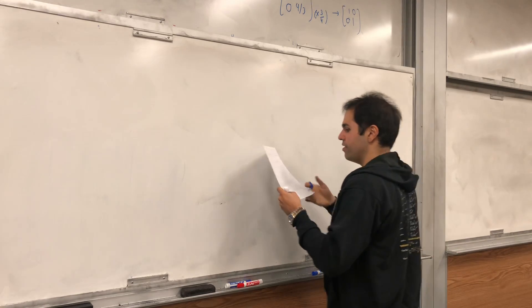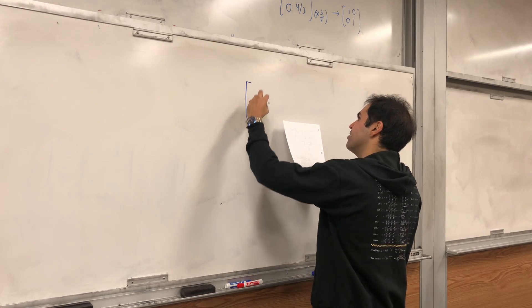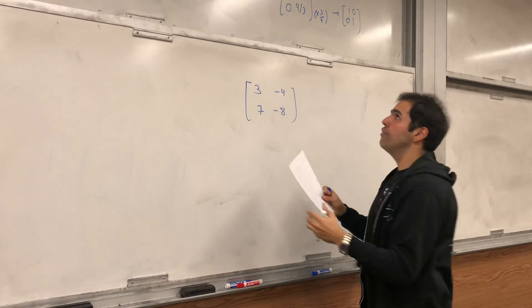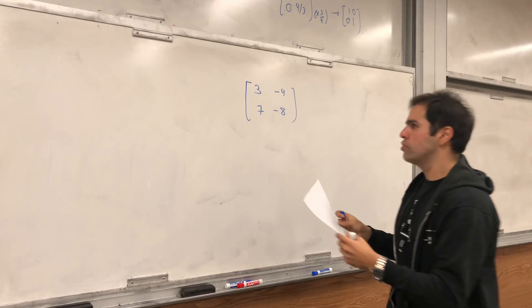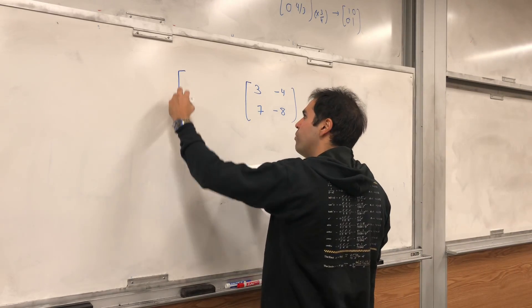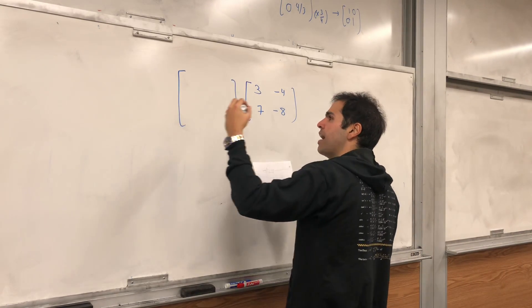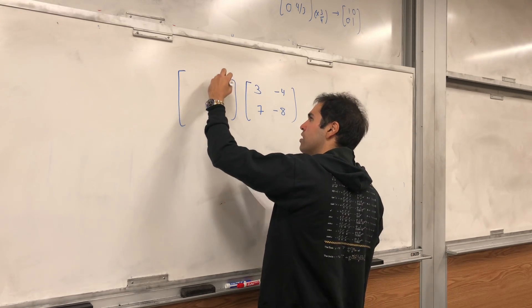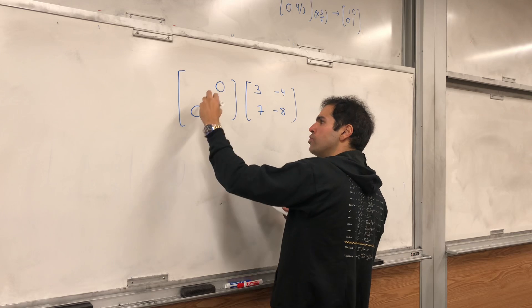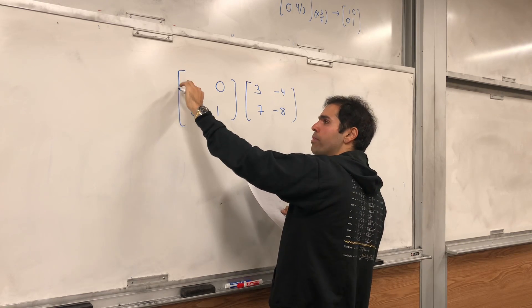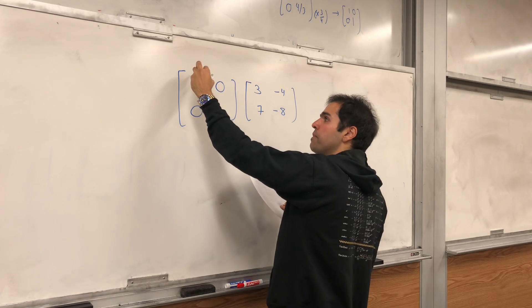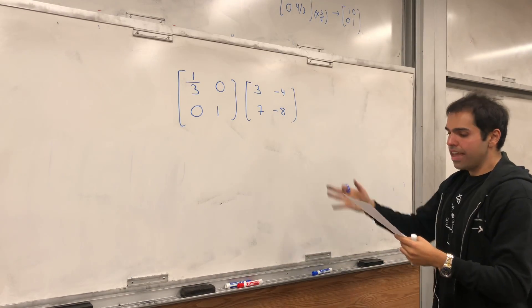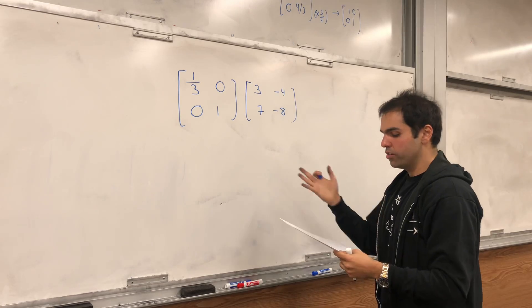So, 3, minus 4, 7, minus 8. The first thing was to multiply the first row by 1 third. We can write this in terms of the elementary matrix, which multiplies the first row by 1 third. It's just 0, 0, it's like the identity matrix, but the row we multiplied by becomes that number. So, 1 third, 0, 0, 1 third. That is the elementary matrix corresponding to multiplication.